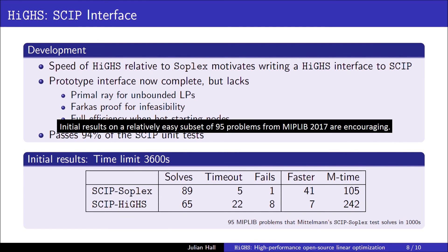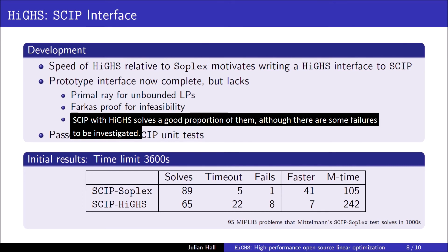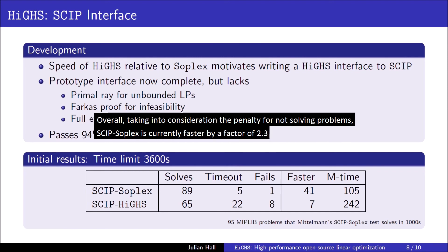Initial results on a relatively easy subset of 95 problems from MIPLIB 2017 are encouraging. SCIP with HISE solves a good proportion of them, although there are some failures to be investigated. When both solvers are successful, SCIP with SOPLEX is meaningfully faster on 41 problems and HISE on 7. Overall, taking into consideration the penalty for not solving problems, SCIP with SOPLEX is currently faster by a factor of 2.3.